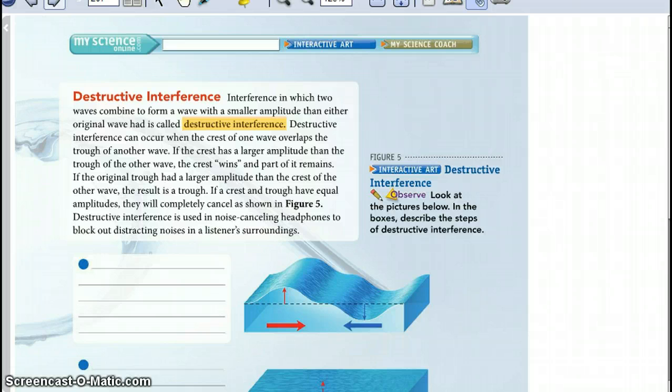If a crest and a trough have equal amplitude, they will completely cancel each other as shown in figure 5. Destructive interference is used in noise-canceling headphones to block out distracting noises in a listener's surrounding.